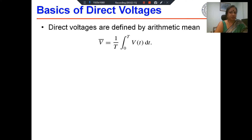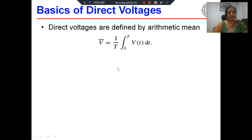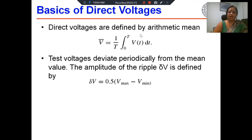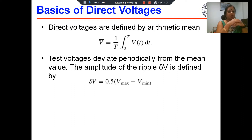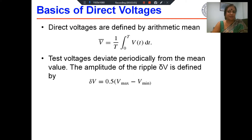When we talk about direct voltages, ideally the voltage should be perfectly constant, but that cannot happen in practice. So direct voltages are defined by the arithmetic mean V-bar, which is equal to (1/T) times the integration over the entire time period 0 to T of V(t) dt. This is the test voltage. Test voltages applied on the specimen will not remain constant, and there will be some deviation from the mean as well as the maximum value. These deviations are periodical and are associated with the frequency of the supply voltage. The amplitude of the ripple, delta V, is defined as half of the difference between Vmax and Vmin. The ripple factor is defined as the ratio of the ripple voltage to the mean voltage.